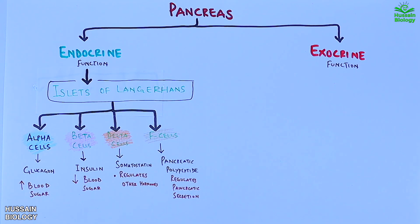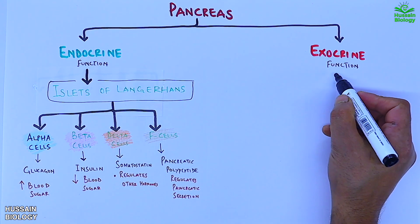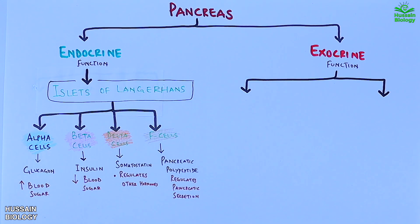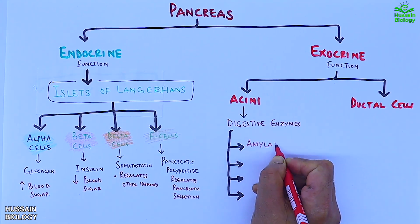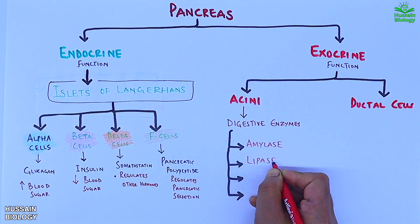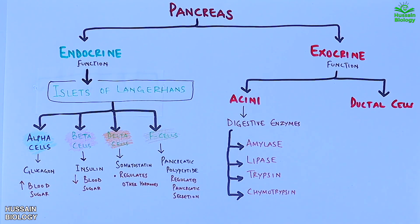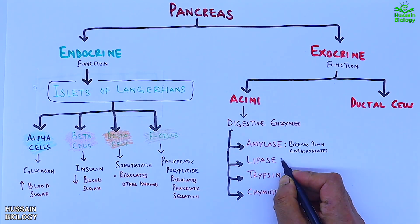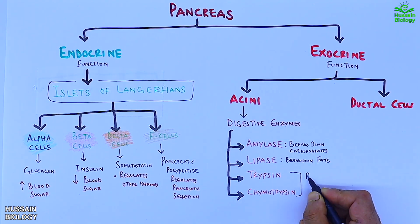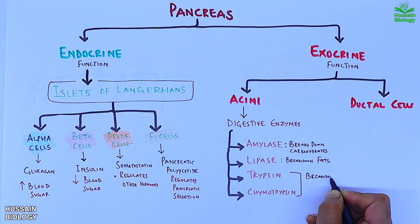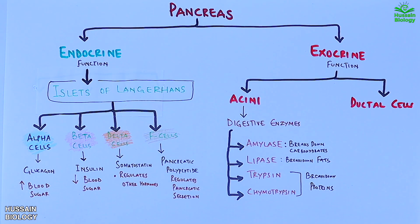Getting to the exocrine part, this function is attributed to acinar and ductal cells. The acinar cells produce digestive enzymes like amylase, lipase, trypsin, and chymotrypsin. Amylase breaks down carbohydrates, lipase breaks down fats, whereas trypsin and chymotrypsin break down proteins.